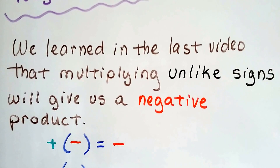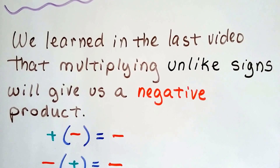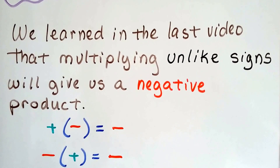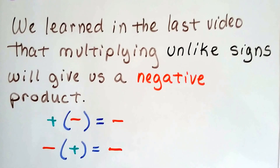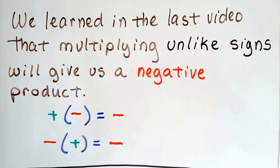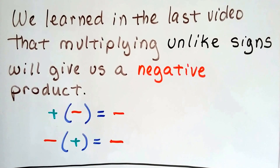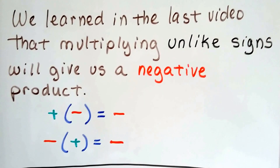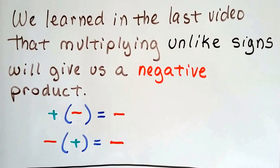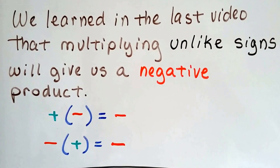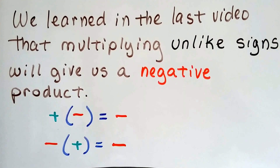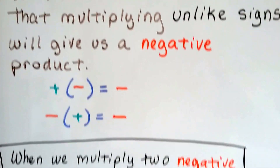We learned in the last video, 2.5a, that multiplying unlike signs will give us a negative product — whether it's a positive times a negative or a negative times a positive, it's going to be a negative product.